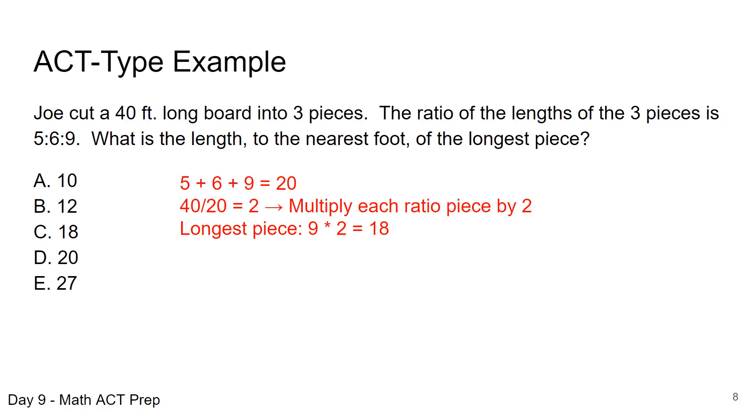Now here's another way that you can think about working the same exact problem. It's very similar. You take each component of the ratio, the 5, 6, and 9, and we put an X on that, a variable, and we set that equal to the total length, in this case the board, the 40 feet, and we're going to solve for X and we get that 20X equals 40, or X is going to be equal to 2.